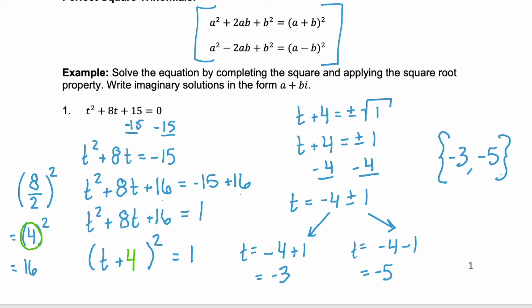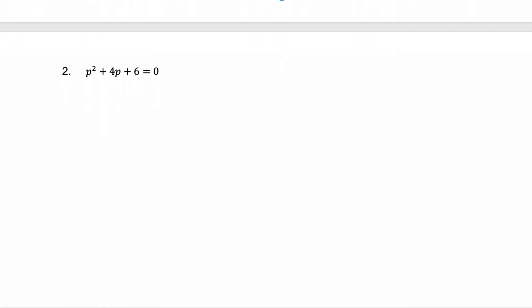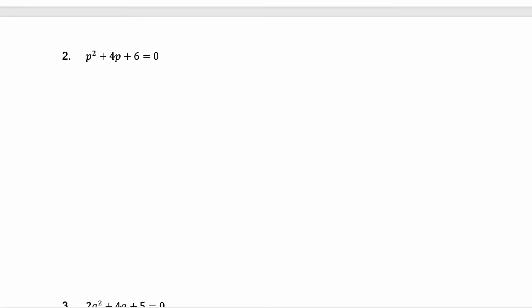Completing the square isn't that bad. Let's do another example. Remember step 1: make sure your leading coefficient is 1, and our leading coefficient is 1. Step 2: move your constant term to the other side. We need to subtract 6 from both sides. That gives us p squared plus 4p equals negative 6.